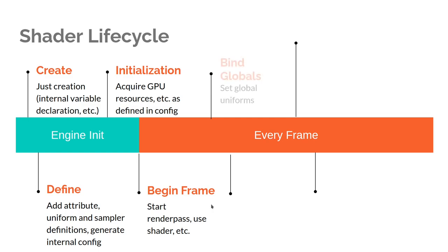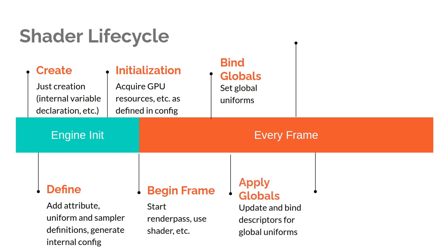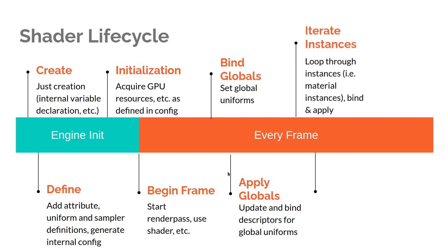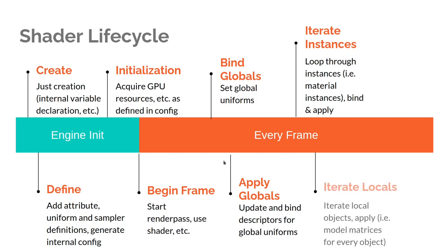We move on to bind our globals, where we set global uniforms — our projection and view matrix and things of that nature. Then we apply those globals, which updates and binds the descriptors for the global uniforms. Then we repeat this process at the instance level: we iterate the instances, for example material instances, and bind and apply. Then we iterate the locals, which are the individual objects in the world. Once per object, we send up a model matrix. That's the shader lifecycle at a high level.